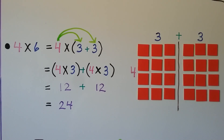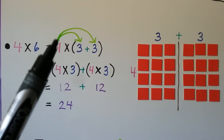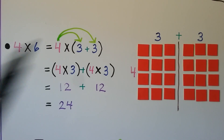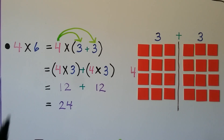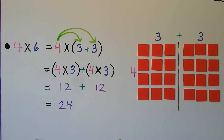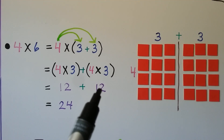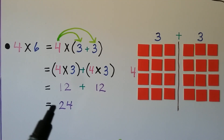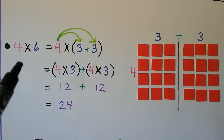Here we have 4 times 6, which means we have 4 groups of 6. We can use the distributive property and write 4 times 3 plus 4 times 3 — that's 4 times (3 plus 3). We split the 6 into a 3 plus 3. 4 times 3 is 12, plus another 4 times 3 which is also 12. 12 plus 12 is equal to 24, so 4 times 6 is equal to 24.